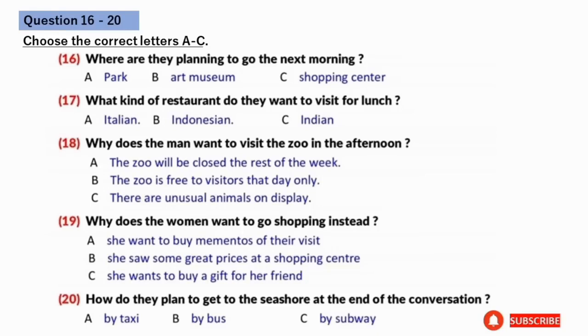Now listen and answer questions 16 to 20. Several days later, Dave and Maria met on campus. So, what do you want to do tomorrow? Well, let's look at this city guide here. Here's something interesting. Why don't we first visit the art museum in the morning? OK, I like that idea. Where do you want to have lunch? How about going to an Indian restaurant? The guide recommends one downtown, a few blocks from the museum. Now, that sounds great.